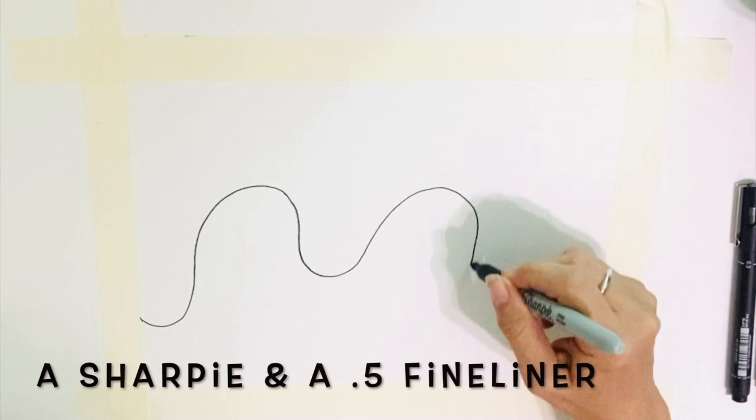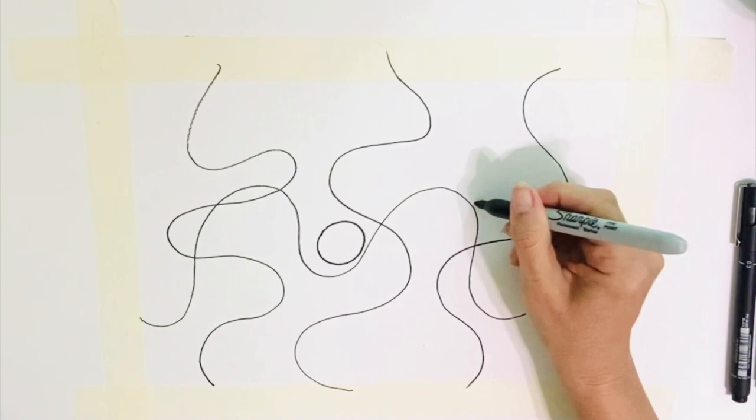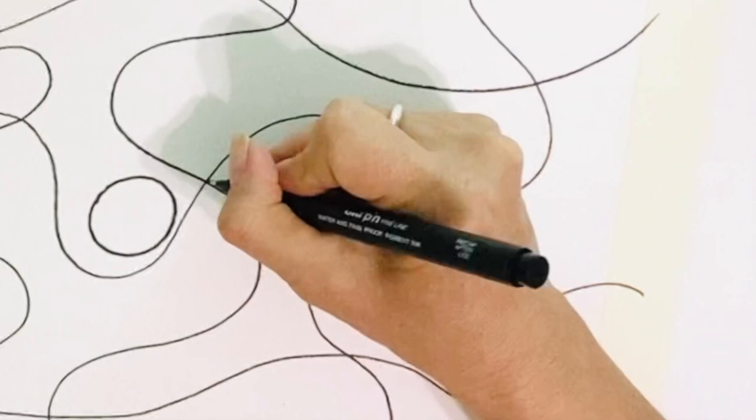The process of neurographic art links the conscience to the subconscious. You start by drawing lines and shapes using a sharpie or a fine liner. Let your arm guide the way.